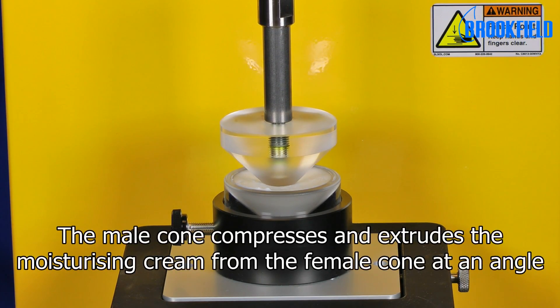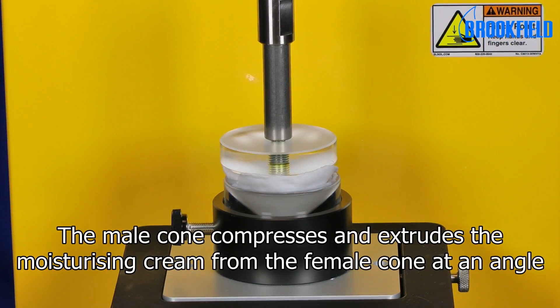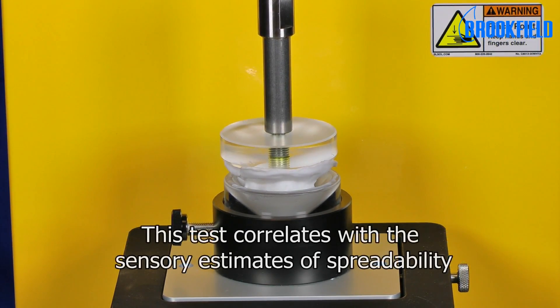Here the male cone compresses and extrudes the moisturizing cream from the female cone at an angle. This test correlates with the sensory estimates of spreadability.